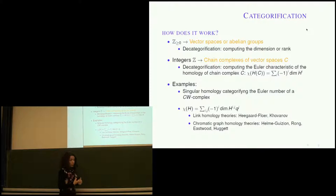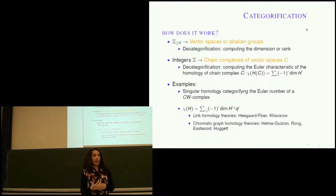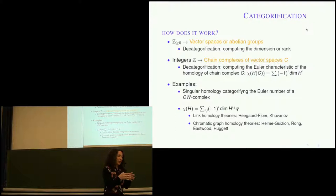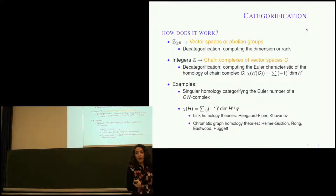If you've taken algebraic topology, you've probably computed the Euler number of a polyhedron — the number of vertices minus edges plus faces. If you proved that the Euler characteristic is constant, you probably did it combinatorially. But in topology it comes for free: all convex polyhedra are just spheres, their homology is the same as the homology of a sphere, and therefore their Euler characteristic must be two.